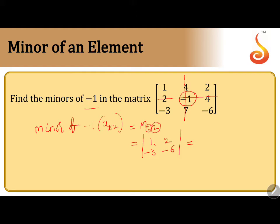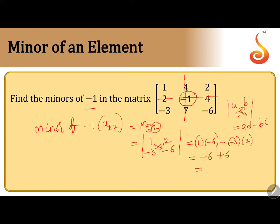The determinant of the 2×2 matrix is AD minus BC. So: 1 into minus 6, minus minus 3 into 2. This gives minus 6 plus 6, which equals 0. So the minor of the element is 0.